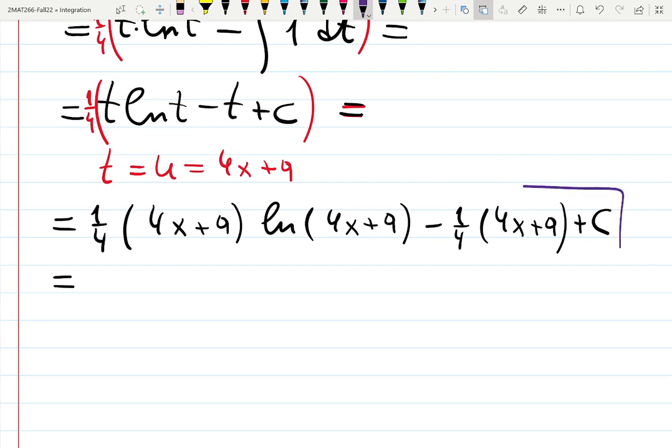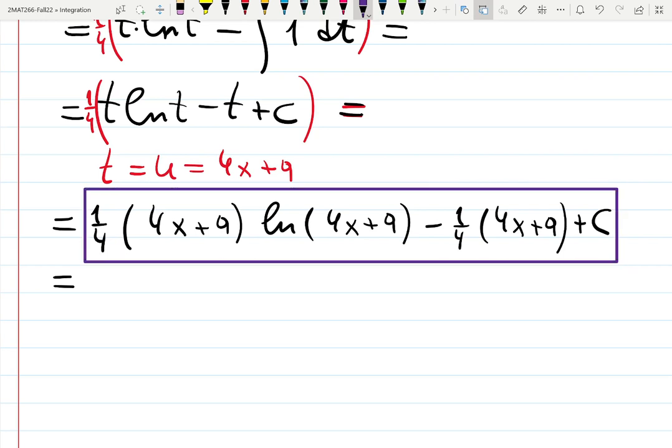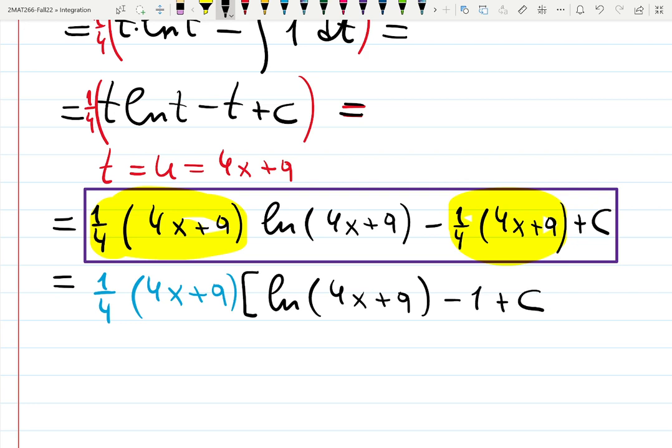However, if you see a different answer in your solutions, let me tell you how it was obtained. First of all, we can factor out a repetitive part which is one quarter 4x plus 9. Let's do that. We're factoring out one quarter 4x plus 9, brackets ln 4x plus 9 minus 1 plus c. Does that make sense? I hope it does.